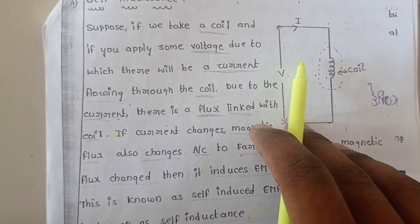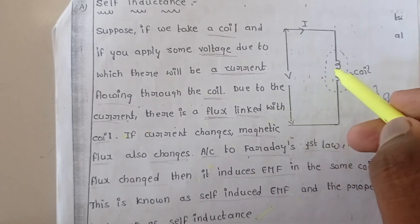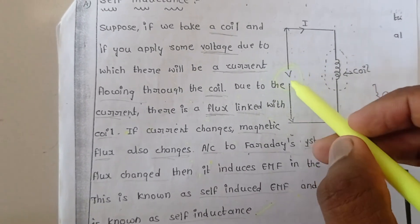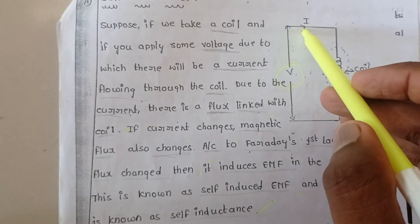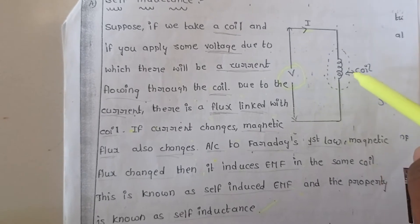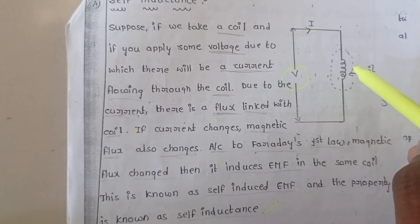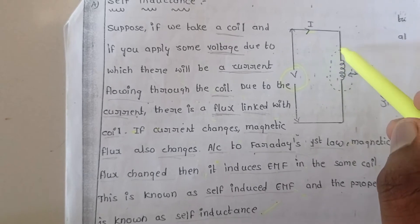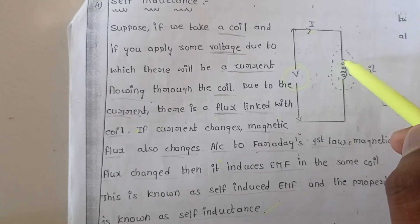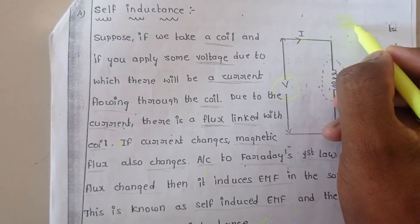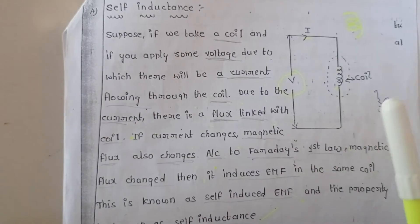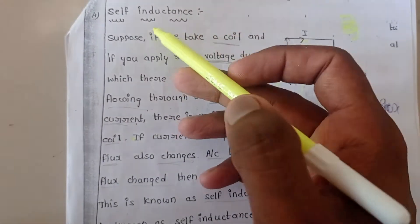Consider this circuit diagram. Here we have one inductor connected to a voltage source. Due to this voltage source, the current i is flowing through the inductor. Whenever the current i flows through the inductor, there is a flux produced by the inductor, and that flux is linked with the coils of the inductor. That is nothing but self inductance.